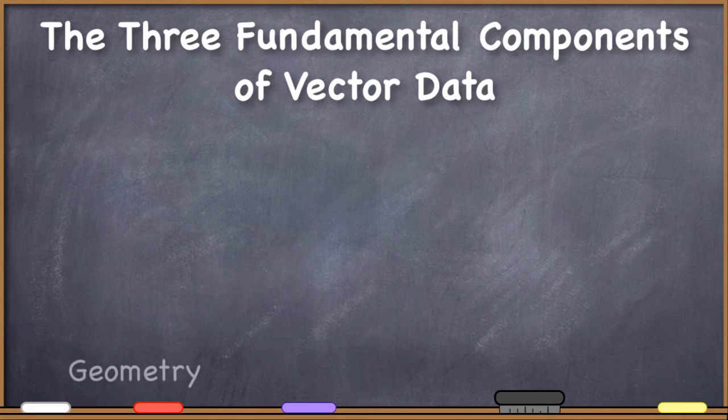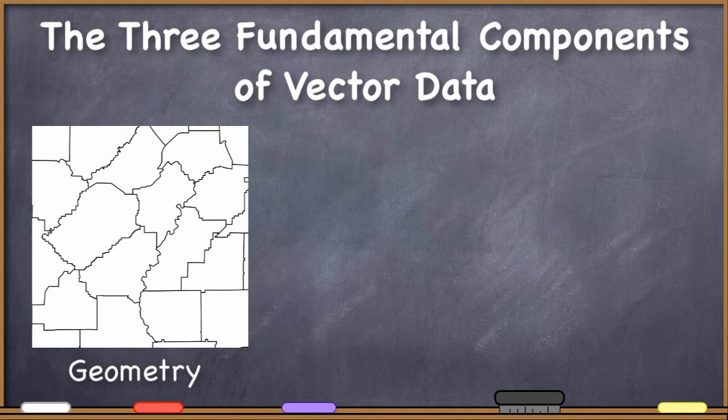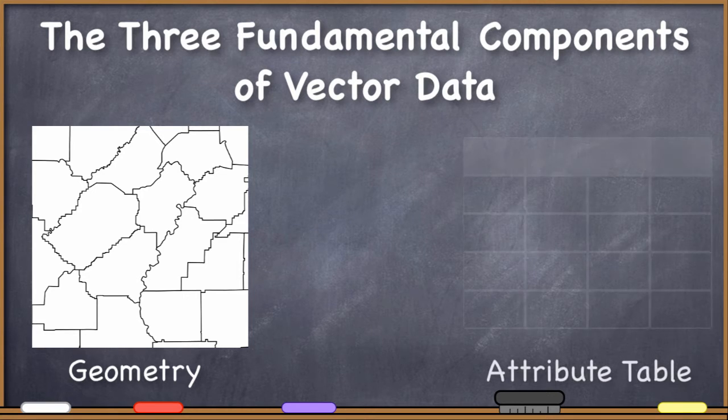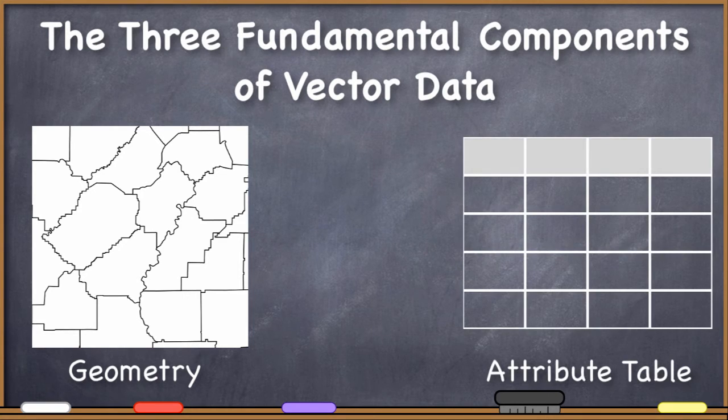The first is Geometry. In the Vector Data Model, every feature has a geometric representation. Second, it includes a Data Table, also called an Attribute Table, which stores all of the information other than geographic position that you would like to store about your features. This is where all of the aspatial tabular data is held.